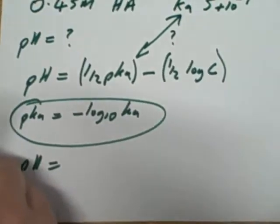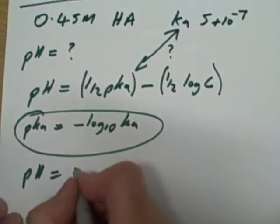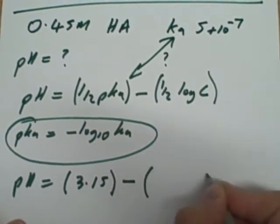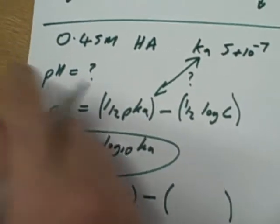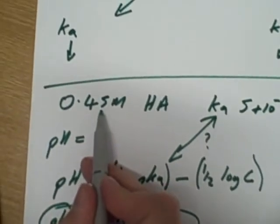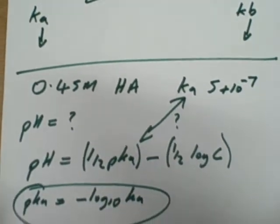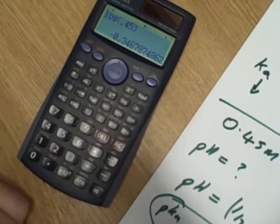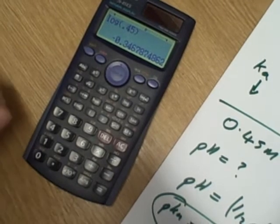Now this is where you've got to be careful. We know the concentration is 0.45 molar. The first thing I've got to do is log it, and it gives me minus 0.3467 and so on. What I don't want to do this time is take the minus off.